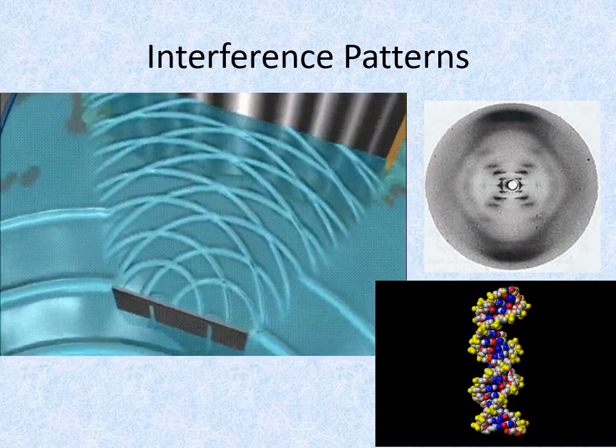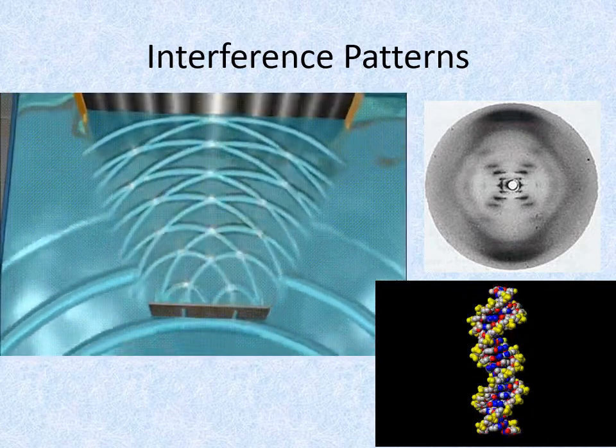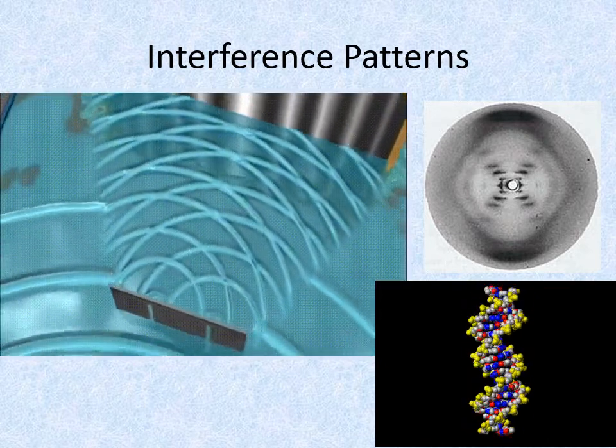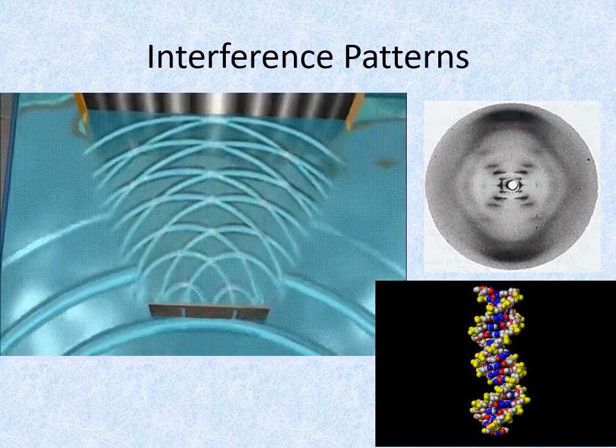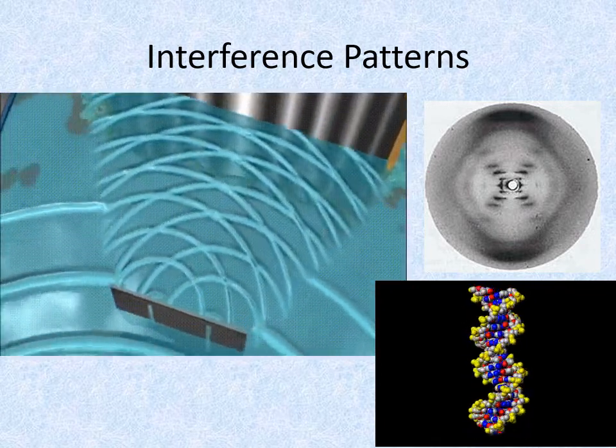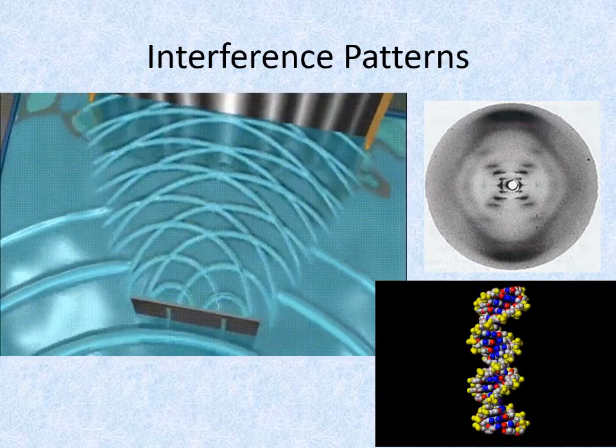In this case, the extremely short wavelengths of light she used were in the X-ray region of the spectrum, and the slits were the spacing between the coils of the helical molecule of DNA. Once Franklin and her colleagues knew the spacing using this X-ray crystallography technique, they could calculate what the molecule structure must be.